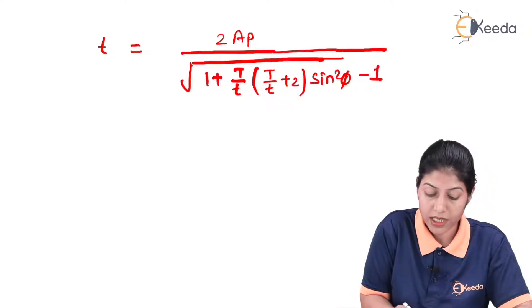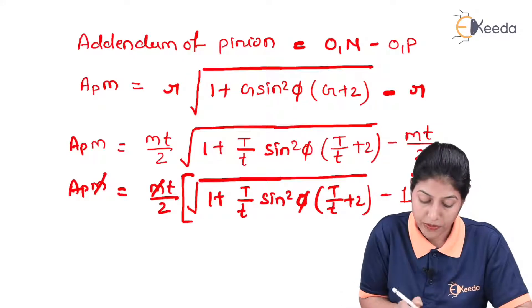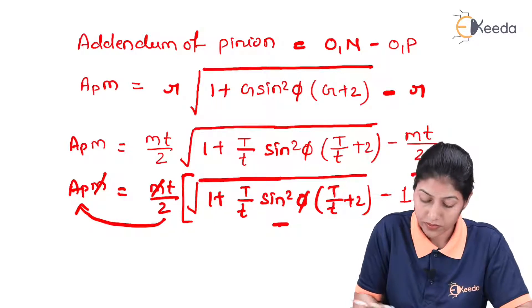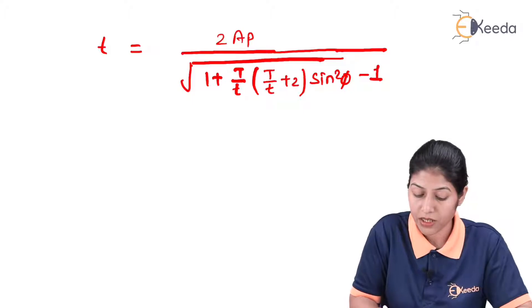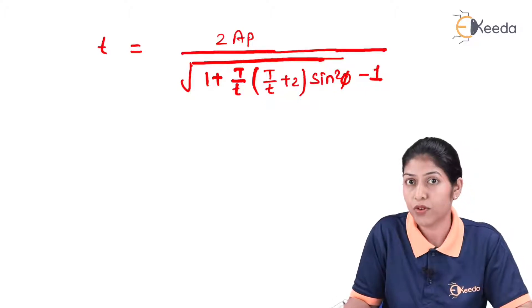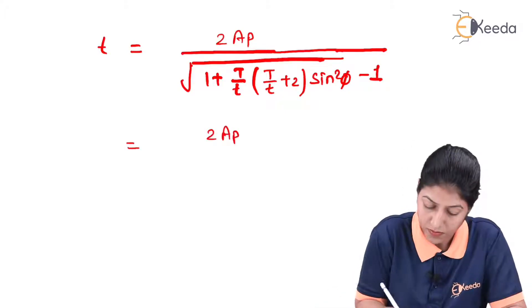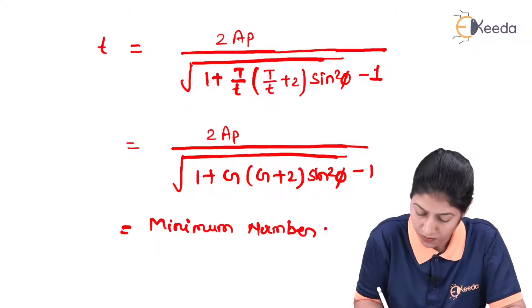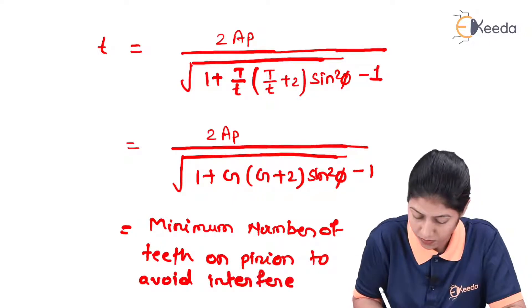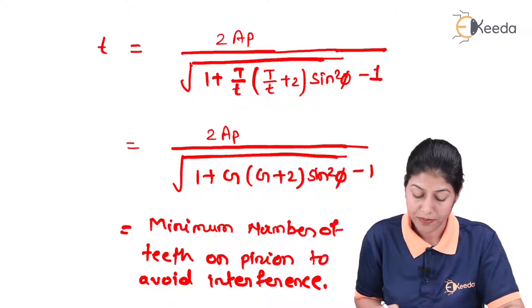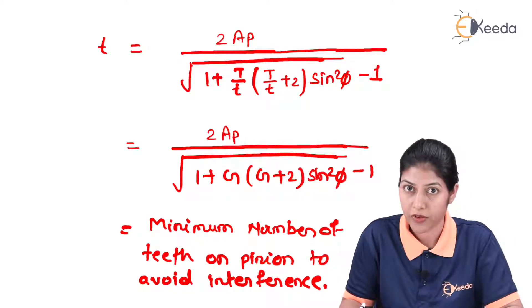Simplifying, the minimum number of teeth on the pinion is: t = 2ap / [√(1 + g·(g + 2)·sin²φ) − 1], where g = T/t = R/r is the gear ratio. This equation represents the minimum number of teeth on the pinion to avoid interference.